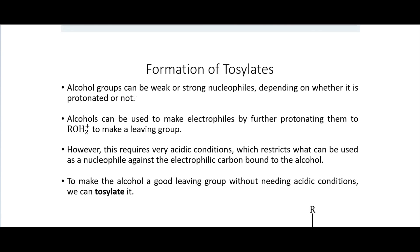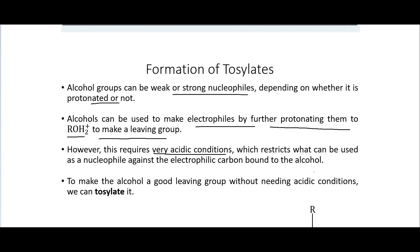Alcohol groups can be weak or strong nucleophiles depending on whether they are protonated or not. Alcohols can be made into electrophiles by protonating them so that water becomes a leaving group. However, this requires very acidic conditions, and alcohols are not great bases. This restricts what can be used as a nucleophile because many nucleophiles will simply react with the hydrogen ions in solution rather than with the electrophilic carbon we are targeting.